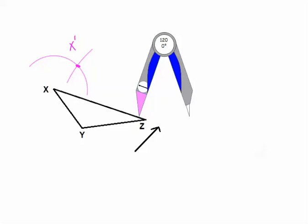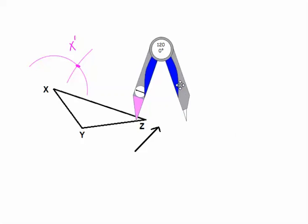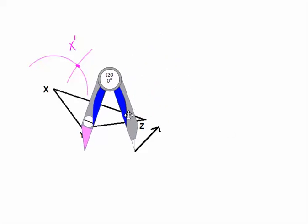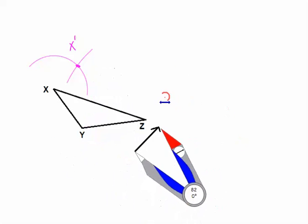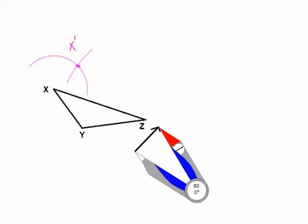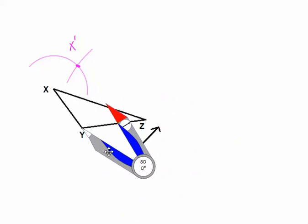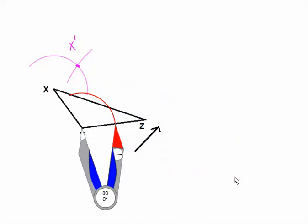Then we're going to take our compass and repeat that process. Put the point of the compass at the endpoint of the arrow and put the pencil tip at the tip of the arrow. Now we will go to Y — point of the compass at Y, keep the compass that same size, and make the arc.